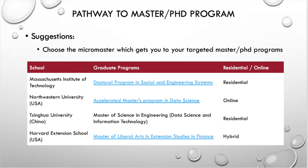You could go to the MicroMasters website to check out the details and decide which MicroMasters to choose. There are 44 programs right now recognizing the credits for the Data Science and Statistics MicroMasters, and I listed 4 of them here.